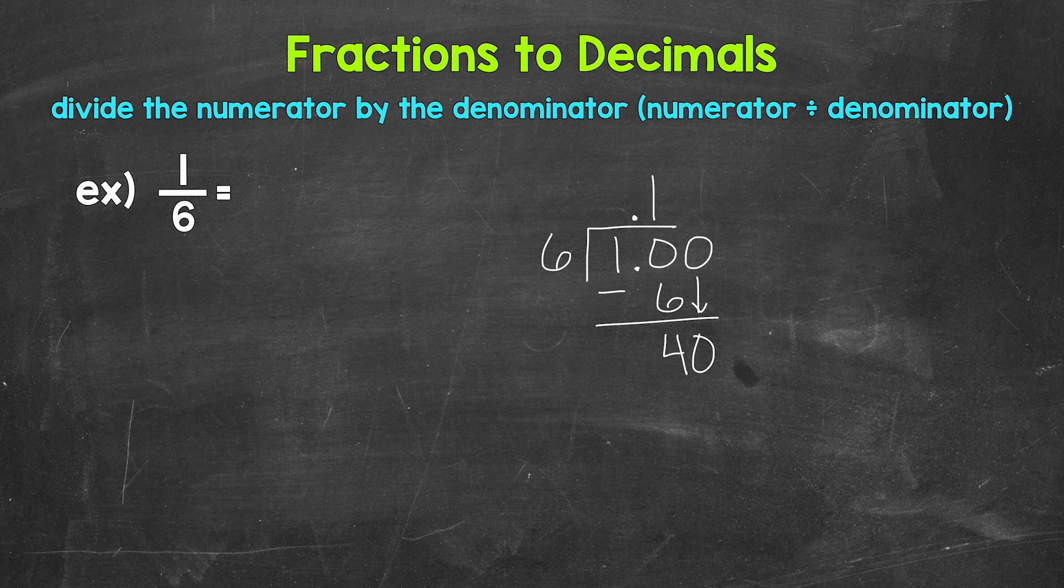40 divided by 6. How many whole groups of 6 in 40? Well, 6. Let me extend this division bar. So 6 up here. Now we multiply. 6 times 6, 36. Subtract. 40 minus 36 is 4.